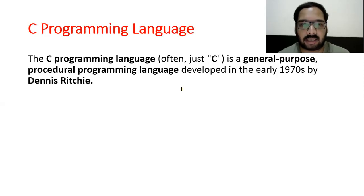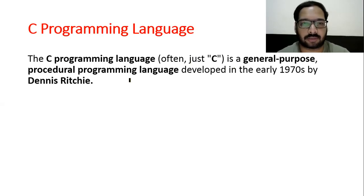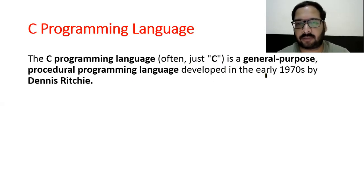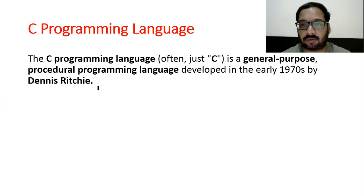What is C programming language? C is a general-purpose procedural programming language developed in the early 1970s. This is basic information that you should know well.